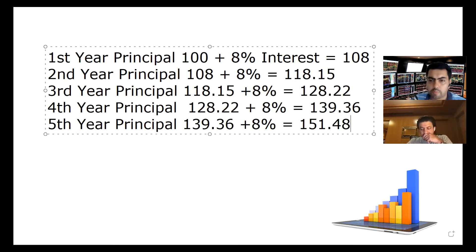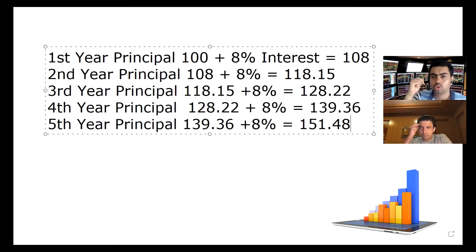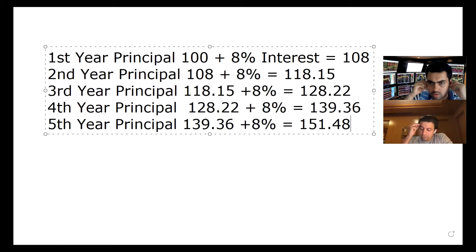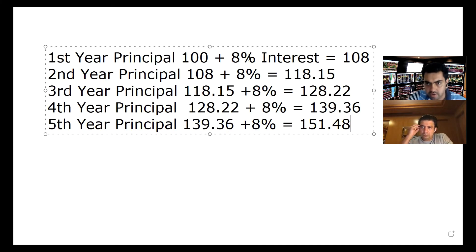Are you seeing the difference that 2% extra over 5 years gives? Now just add a zero. Say you add 10 crores — if you had put it in a bond at 8% for a 5-year bond, the interest in the first year is 80 lakhs. So your 10 crores became 10 crores 80 lakhs.